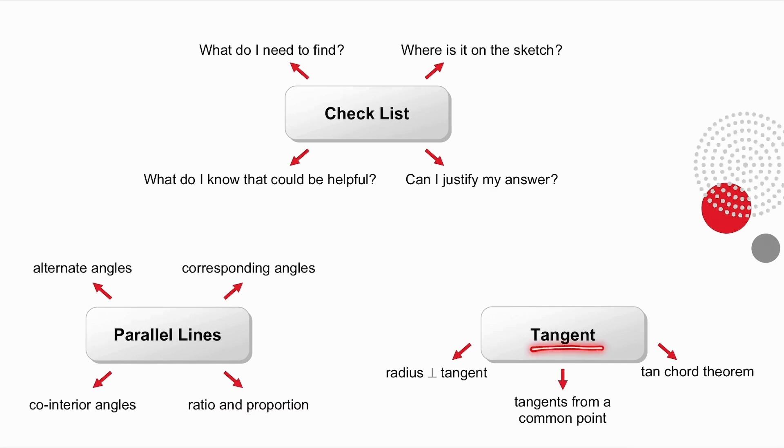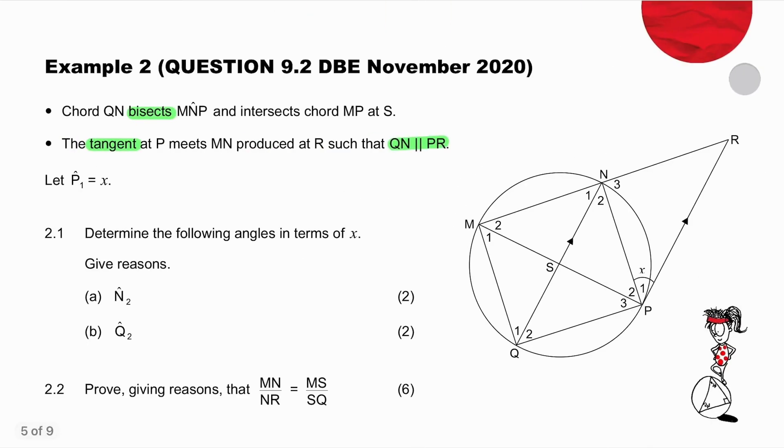They've given you a tangent. Do you have a radius that will be perpendicular to it? Do you have two tangents or do you make use of the tan chord theorem? What I want you to do is pause the video, try this question and then we will do it together.